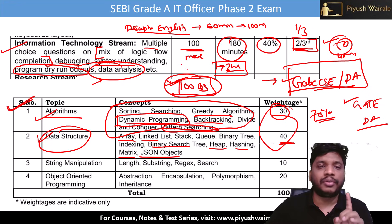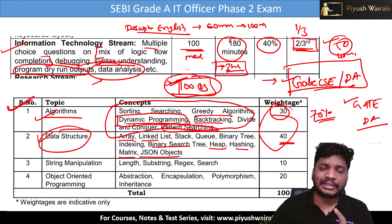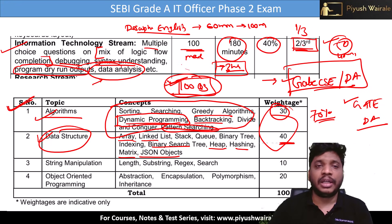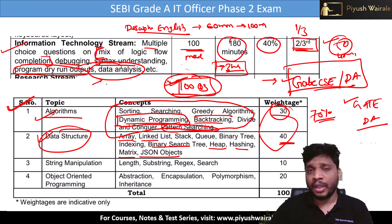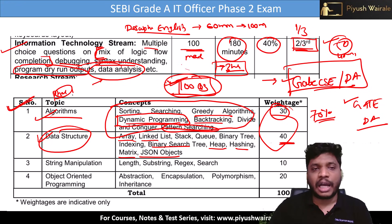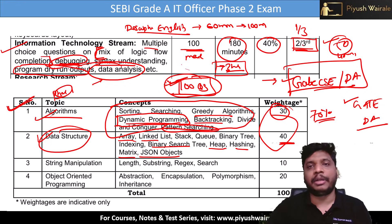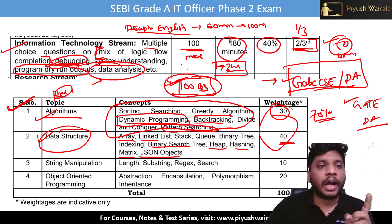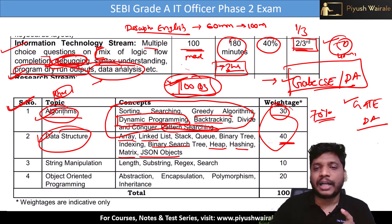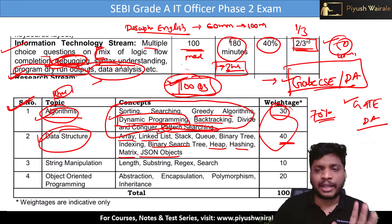These algorithm and data structure topics are already covered in my course except dynamic programming and pattern searching, which are not in the GATE DA syllabus. Rest of the topics are there. We need to cover the concept and solve GATE CSE and data science questions. I am also going to create more questions based on what they have specified — logic flow, completion, debugging, and syntax understanding.